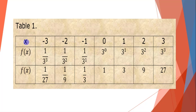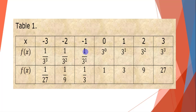Here, x is assigned arbitrarily, so let's start from negative 3 up to positive 3. f(−3) = 1/3³ = 1/27. f(−2) = 1/3² = 1/9. f(−1) = 1/3. f(0) = 3⁰ = 1. f(1) = 3. f(2) = 3² = 9. And f(3) = 3³ = 27.